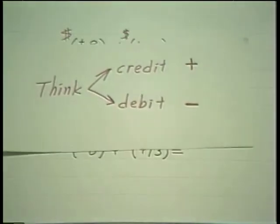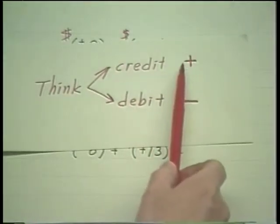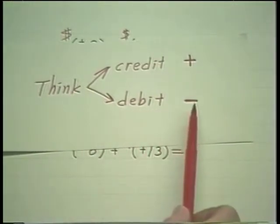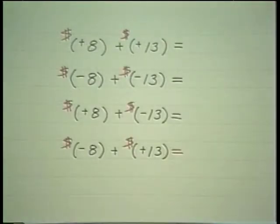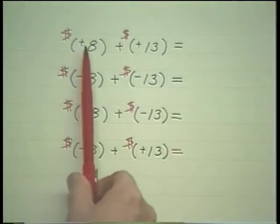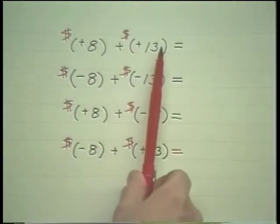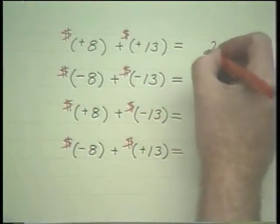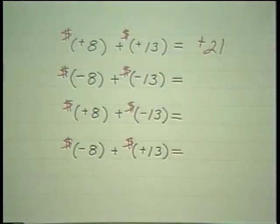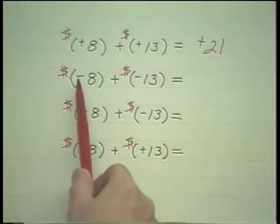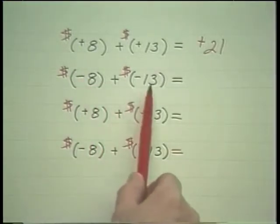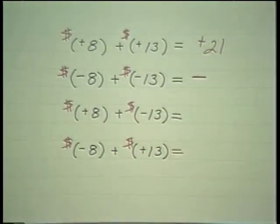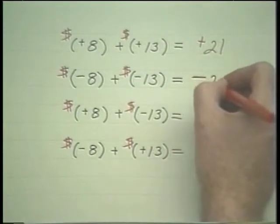Let's think of a positive number as a credit and a negative number as a debit. If I have a credit of eight dollars and get a credit of thirteen more dollars, then I have a total credit of twenty-one dollars, and the credit is positive. But if I owe eight dollars and now owe another thirteen dollars, then I owe — which is what negative means, a debit — twenty-one dollars.